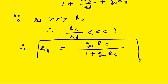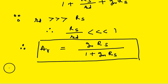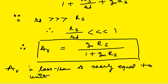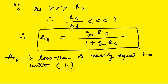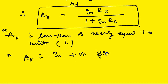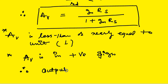Since the denominator is greater than the numerator, AV is always less than one. So there is no voltage gain in the case of the Source Follower FET. It is not a good circuit for amplifying voltage. However, a positive feature is that the output remains in phase with the input — there is no phase reversal.